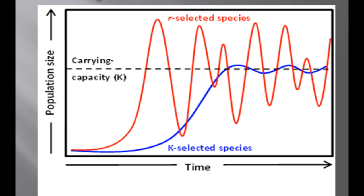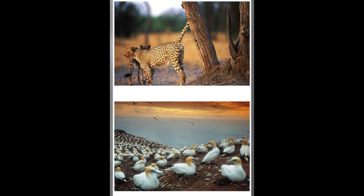Density-dependent birth and death rates are affected by many factors such as competition for resources, territoriality, disease, and predation. In crowded populations, increasing population density intensifies competition for resources and results in a lower birth rate. Regarding territoriality — in many vertebrates and some invertebrates, competition for territory may limit density. For example, cheetahs are highly territorial, using chemical communication to warn others of their boundaries, while oceanic birds exhibit territoriality in nesting behavior.